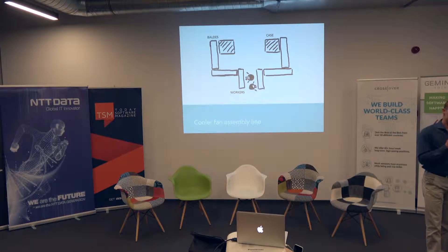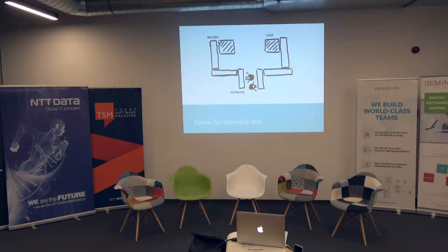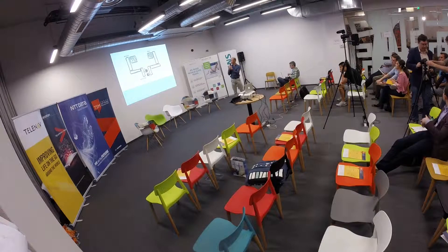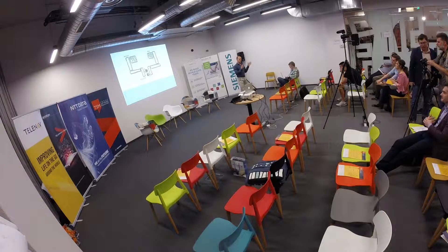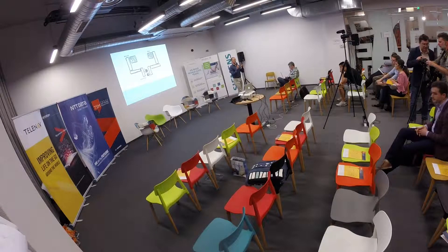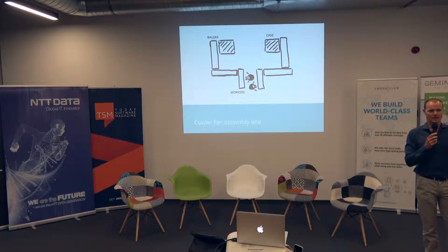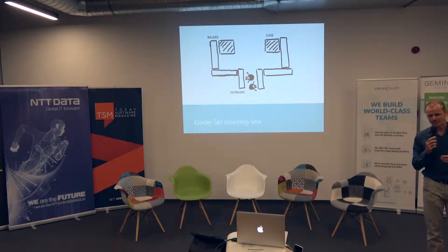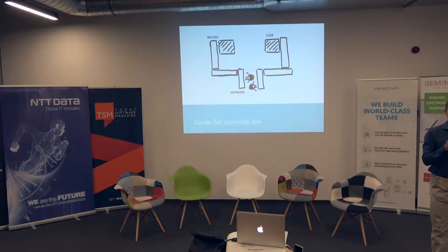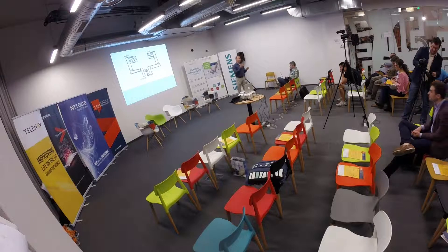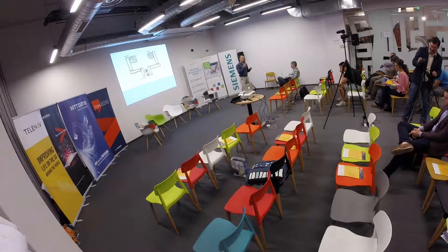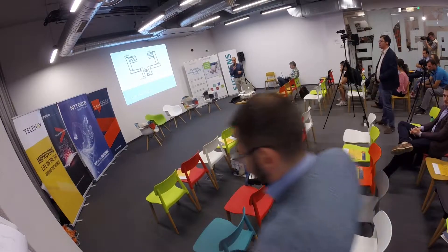The second story is a bit more complicated. This was in a factory where cooler fans for cars are produced. This is the production line. There are two molding machines — one produces the blades, the other produces the case. The conveyor belts transport the pieces to workers and they assemble the fan. The machines produce parts at a fixed frequency, but the workers are humans — they do not have a fixed frequency.